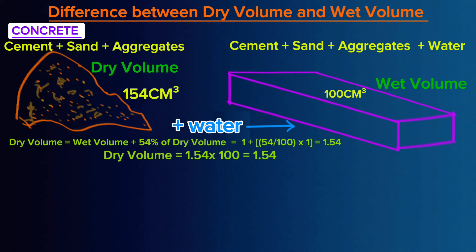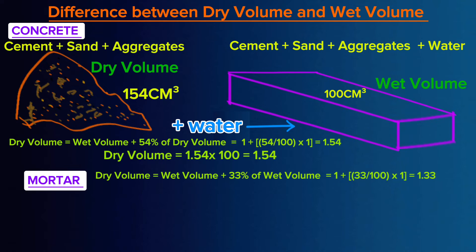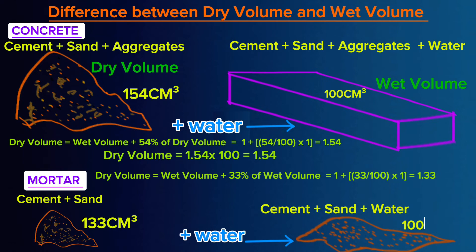Just the same way we have done for concrete, it also applies to mortar. Dry volume here is equal to wet volume plus 33% of wet volume, which can be simplified as 1.33. For example, when you want 100 cubic meters of mortar, which is wet volume, to get dry volume, you simply multiply 100 cubic meters by 1.33 to get 133 cubic meters.